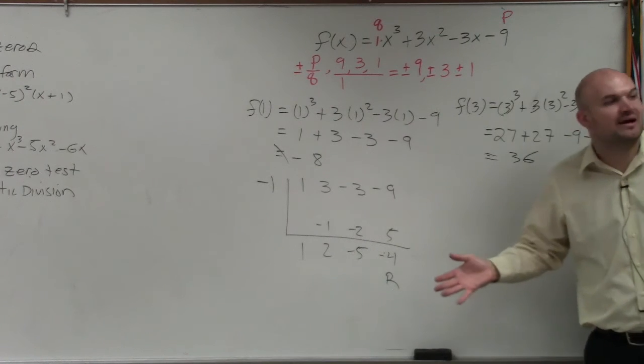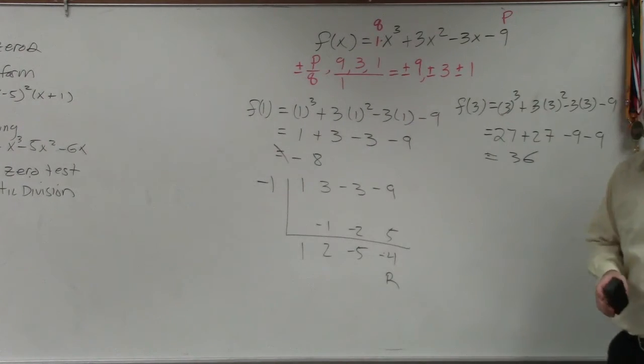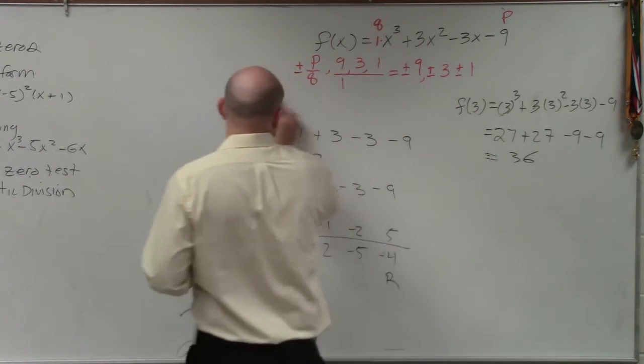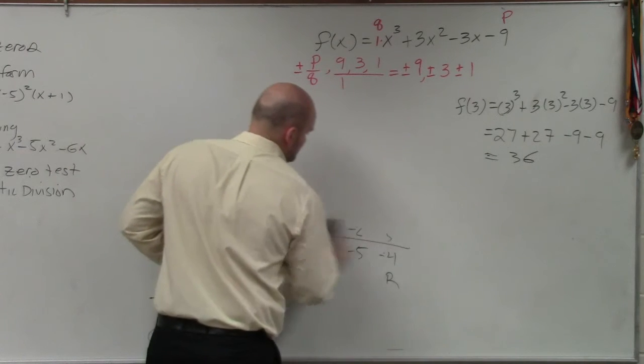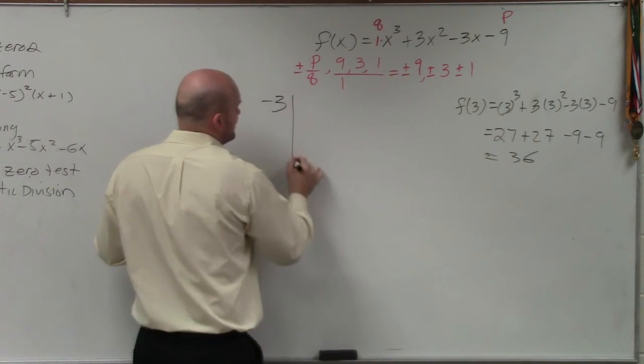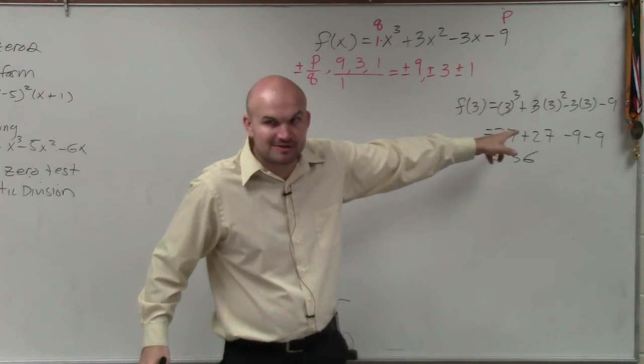Well I did cheat because I'm not going to do problems that I know I don't want you guys to do. So I did do problems and I did figure out that my one rational zero is negative 3. So let me prove it to you. So let's do negative 3. Well negative 3 would have been the next one.